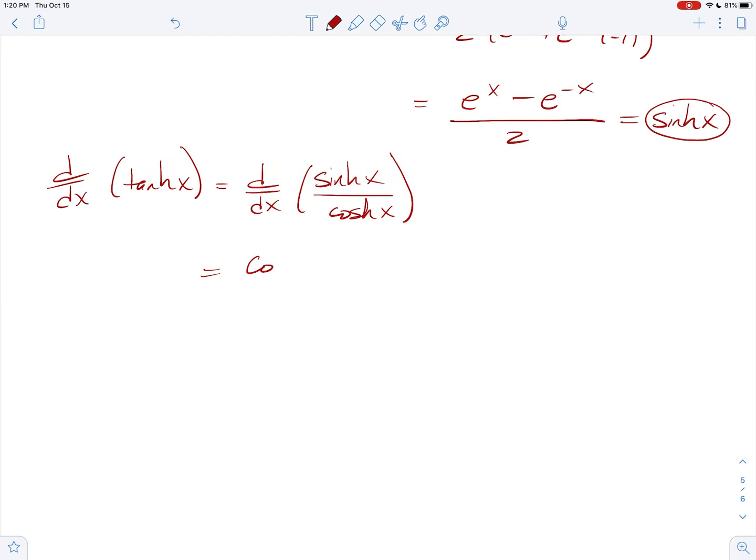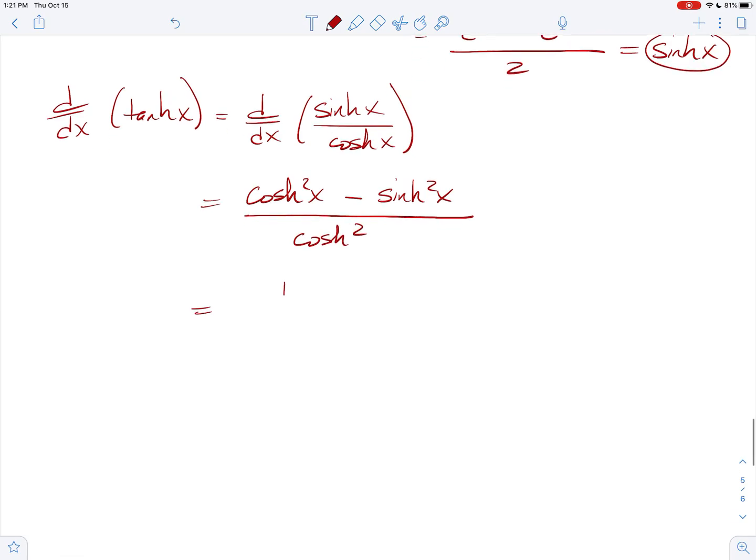...minus the top sinh times the derivative of the bottom, another sinh, so sinh squared x all over cosh squared. But then you realize cosh squared minus sinh squared is 1 over cosh squared—I forgot my x—cosh squared of x, and this is exactly sech squared of x.